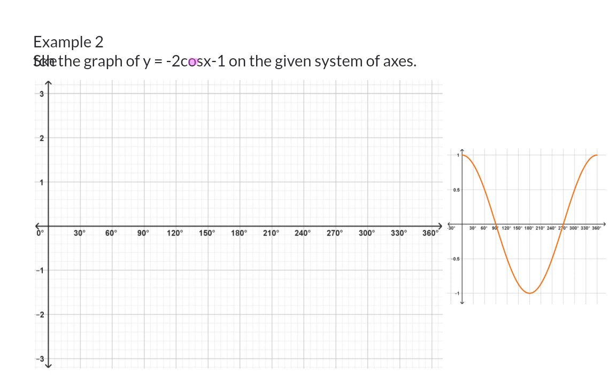Firstly, the minus 2 in front, of which the minus tells us that there's a reflection around the x-axis.